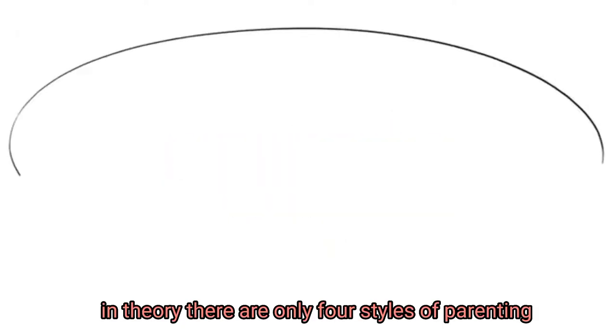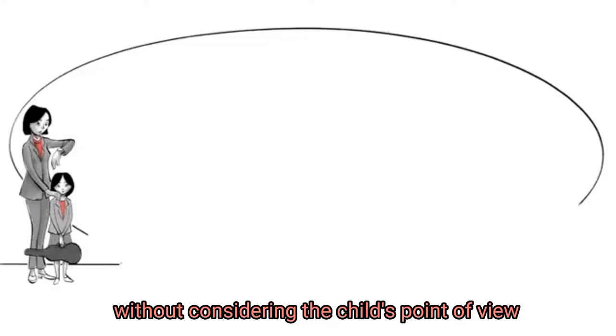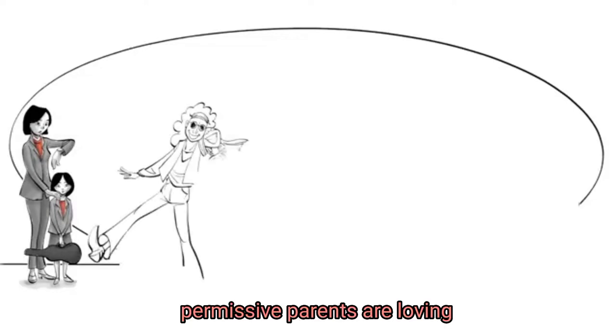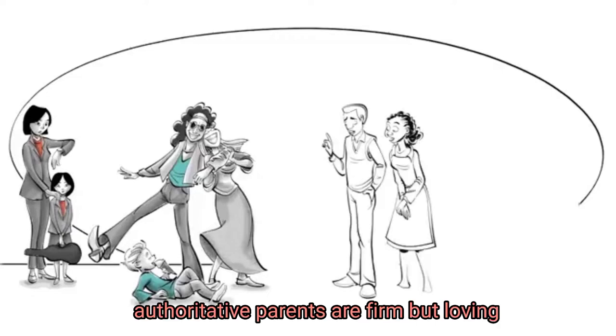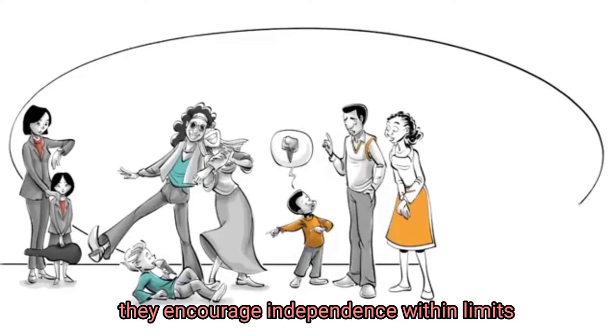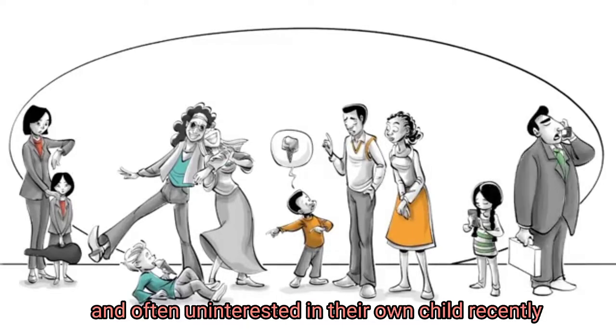In theory, there are only four styles of parenting. Authoritarian parents are controlling and demand obedience without considering the child's point of view. Permissive parents are loving but don't exert any control. There are no rules. Authoritative parents are firm but loving. They encourage independence within limits. Neglecting parents are uninvolved and often uninterested in their own child.